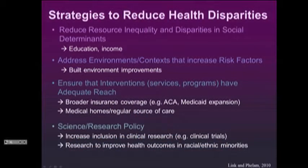Other strategies include addressing environments and contexts through built environment improvements, and ensuring interventions have adequate reach, such as the Affordable Care Act, Medicaid expansion, and medical homes. As scientists, we can also make sure we pay attention to these issues, include disadvantaged groups in our studies, and ensure our research has the secondary impact of improving health outcomes.